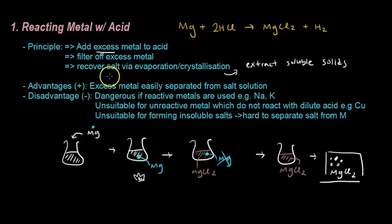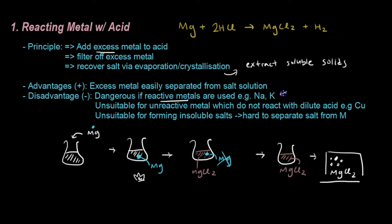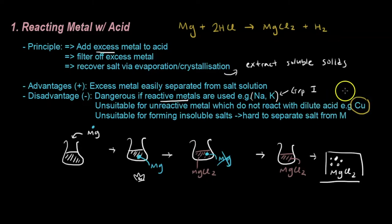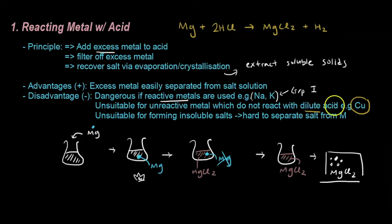The advantage of this method is that excess metal can be easily separated — just filter it off immediately. The disadvantage is that it's dangerous with reactive metals such as Group 1 metals, which would cause an explosion. It's also unsuitable for unreactive metals like copper, which do not react with dilute acid. We use dilute acid in normal labs to avoid extra risk, so copper cannot be used.